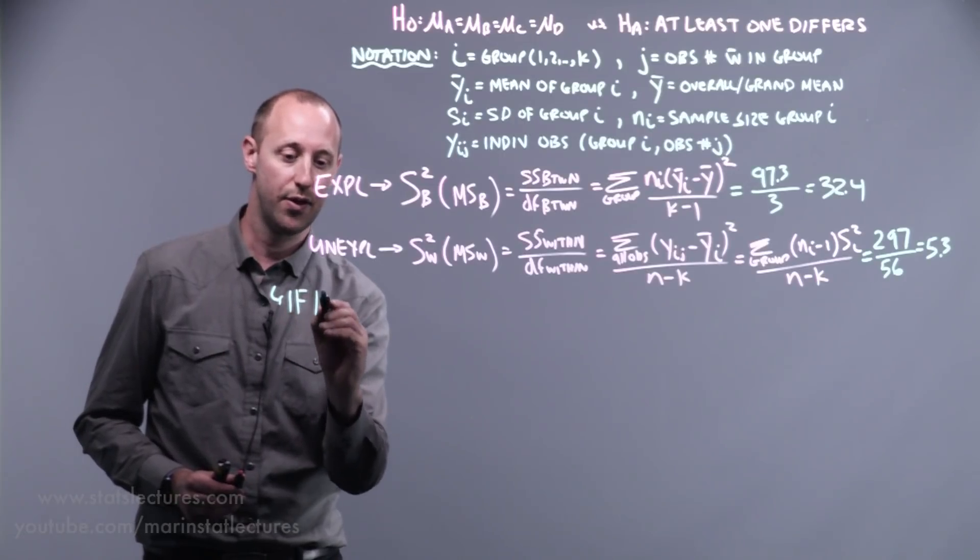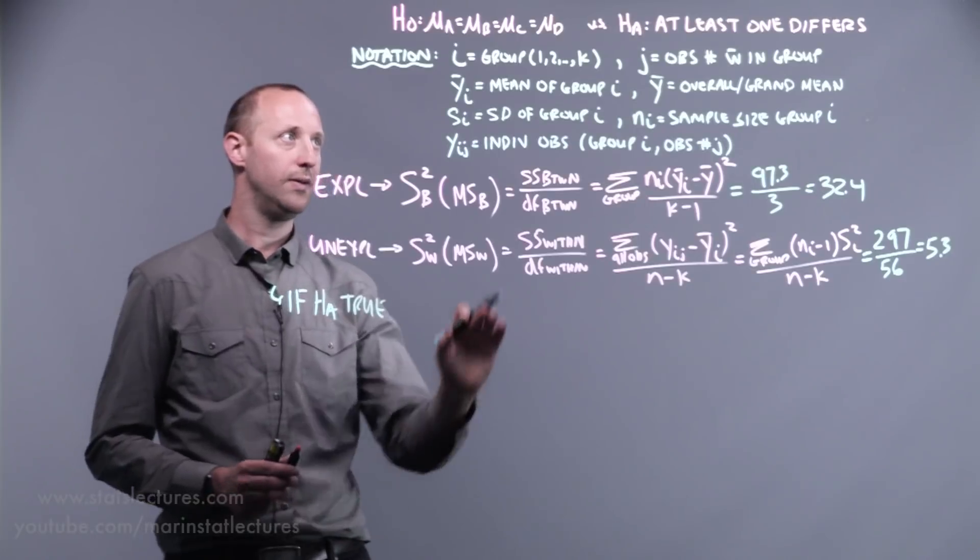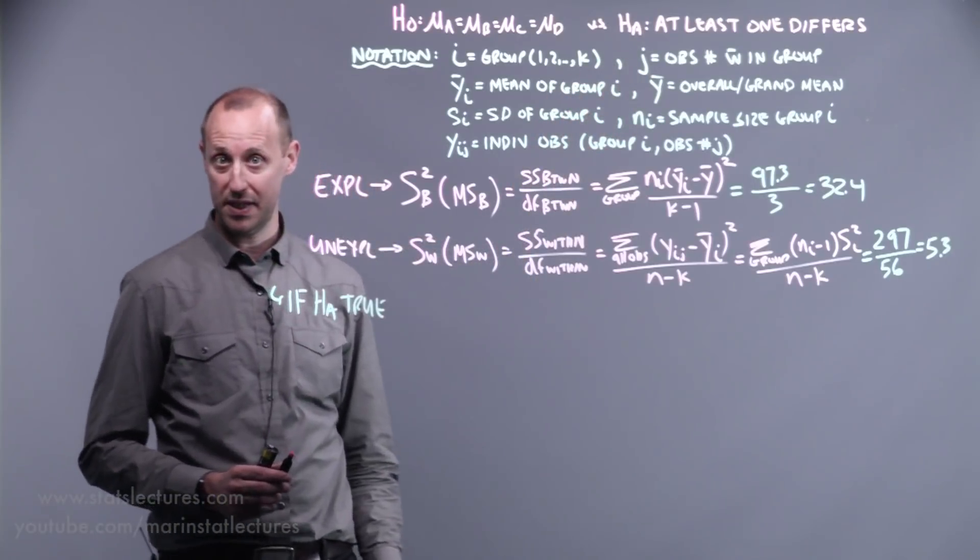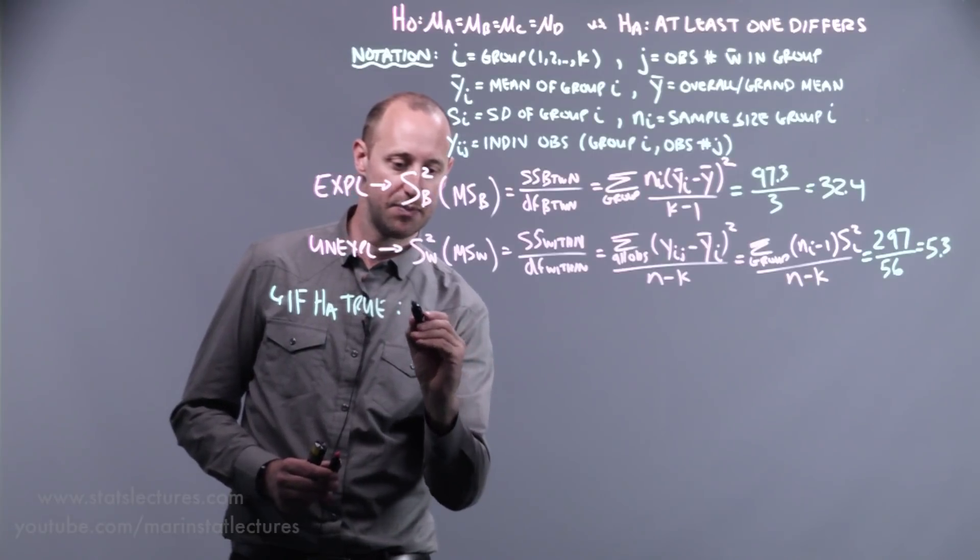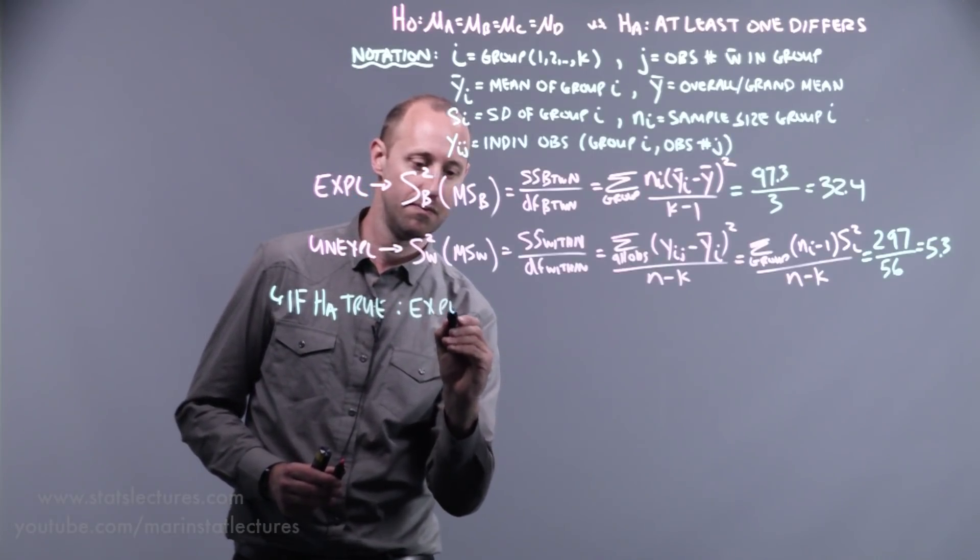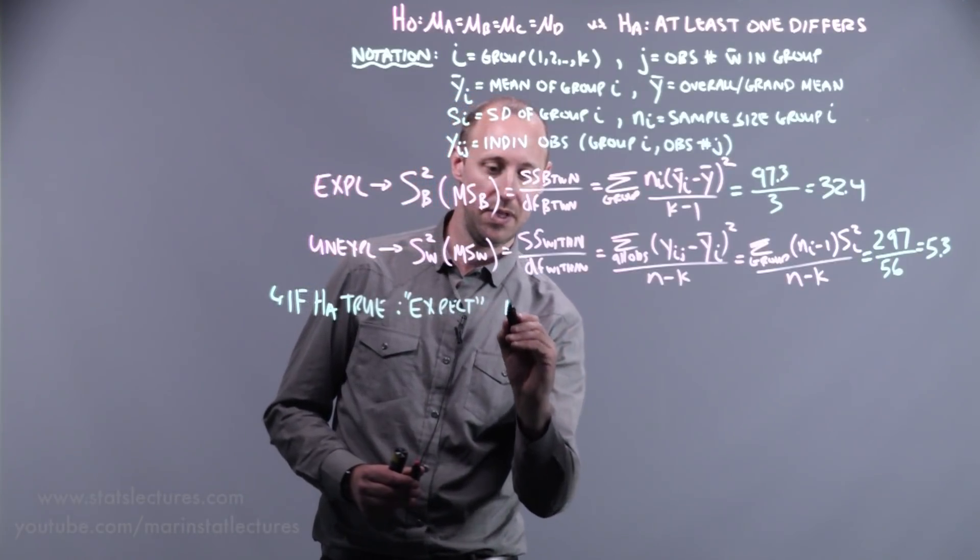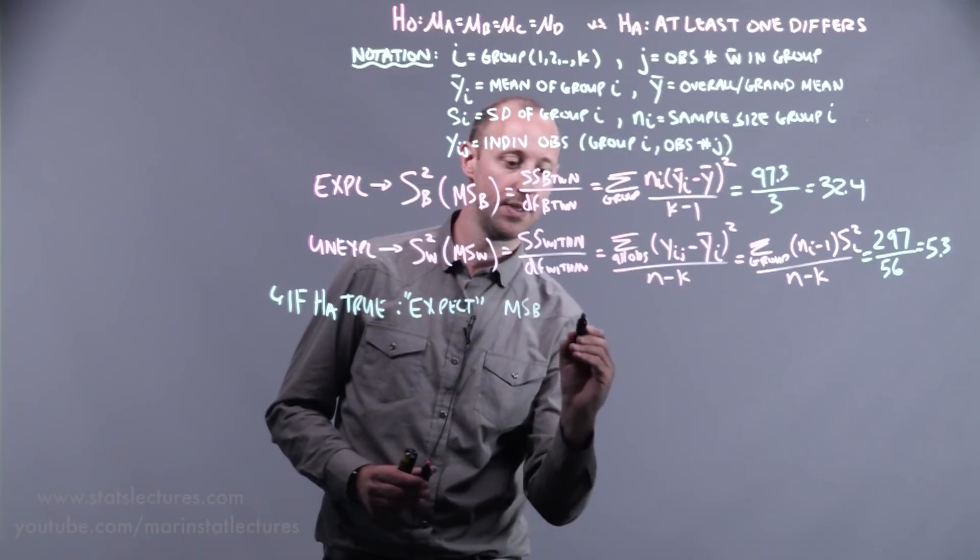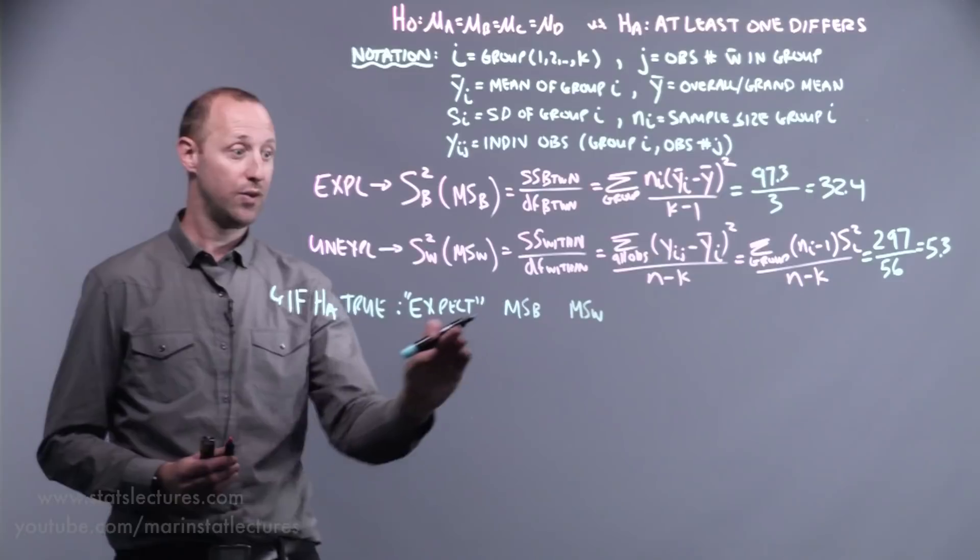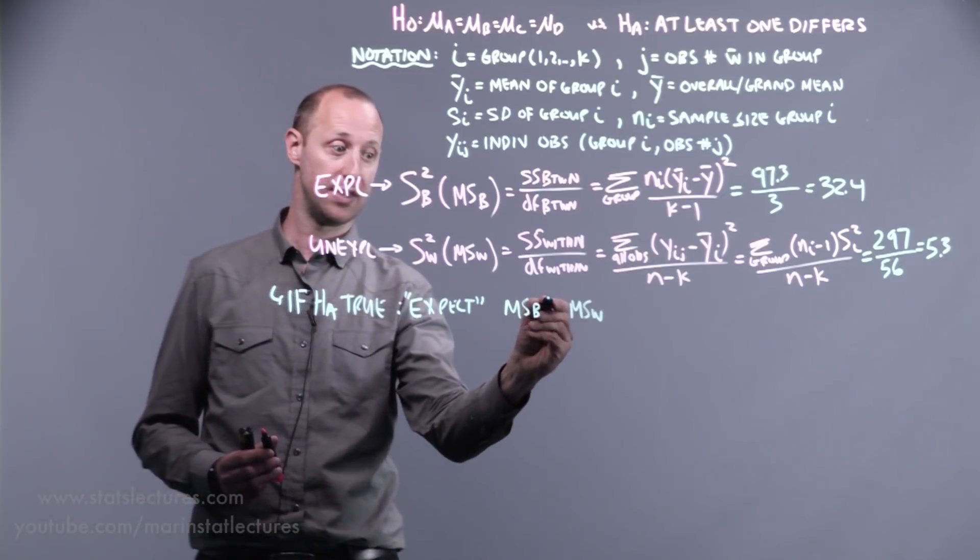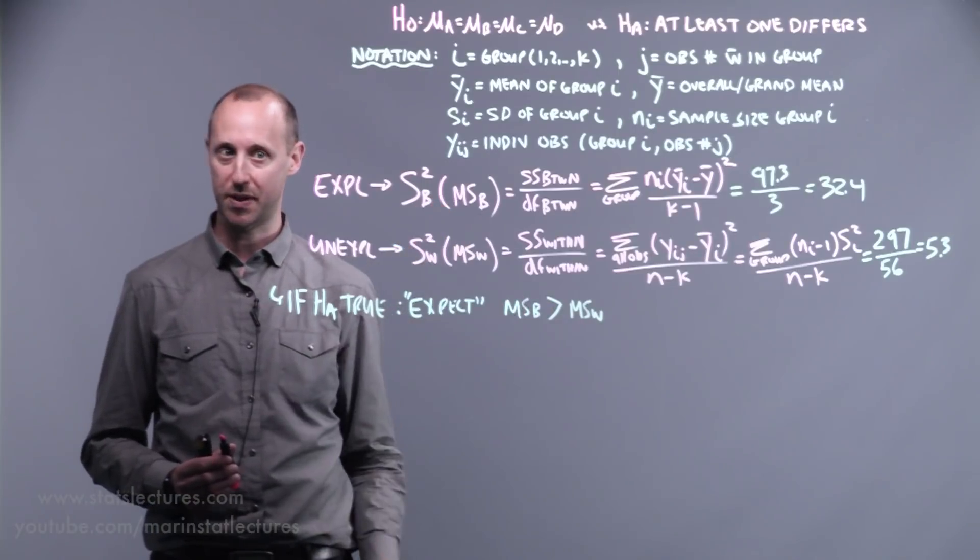So let's try and think our way through some stuff first. Suppose, if the alternative hypothesis is true, if at least one mean differs, if not all the means are the same, how would we expect statistically, how would we expect the mean squares between groups to compare to the mean square within groups? If diets are different, we'd expect this one should be larger than this. There should be much more variability that's explained by diet than not explained by diet.